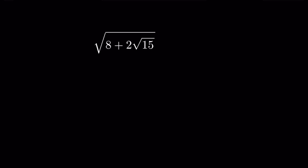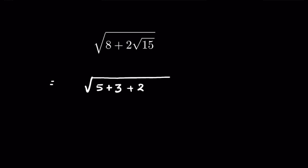We have 8 plus 2 times square root of 15, under a square root, and we have to simplify it. We can write 8 as 5 plus 3, and square root of 15 as square root of 5 times 3.